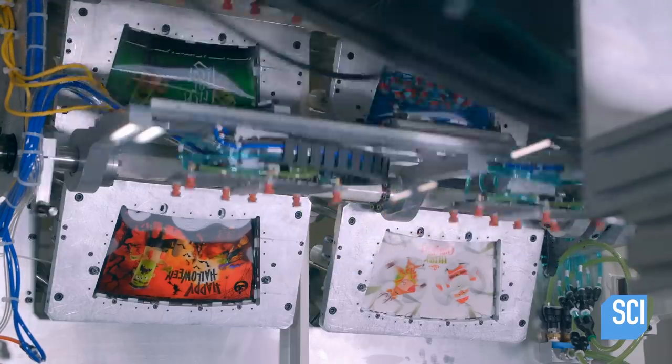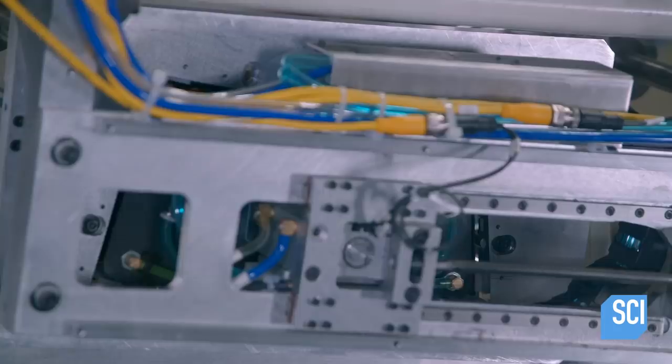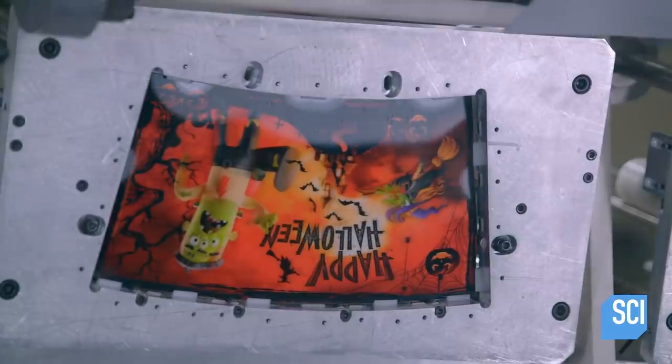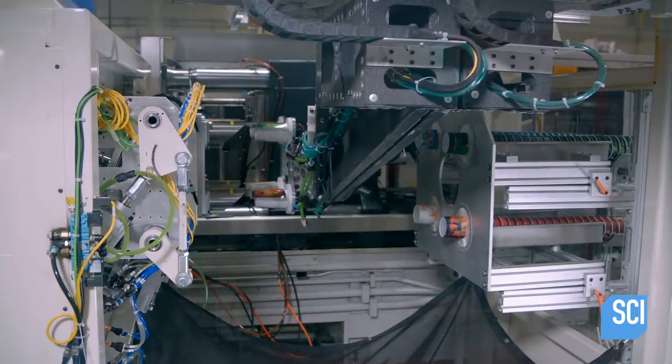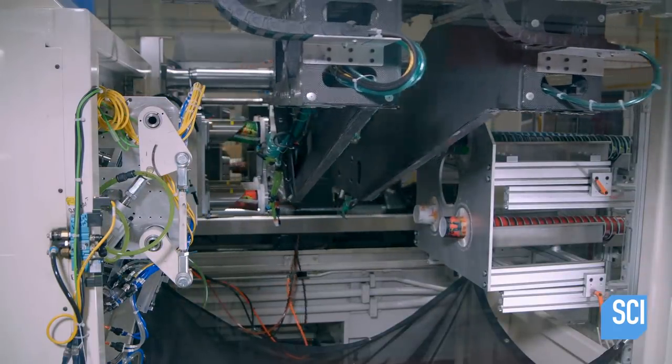A robot with suction grippers picks up the labels one at a time and transfers them to cup-shaped mandrels. The mandrel inserts the 3D label into the mold of a cup.